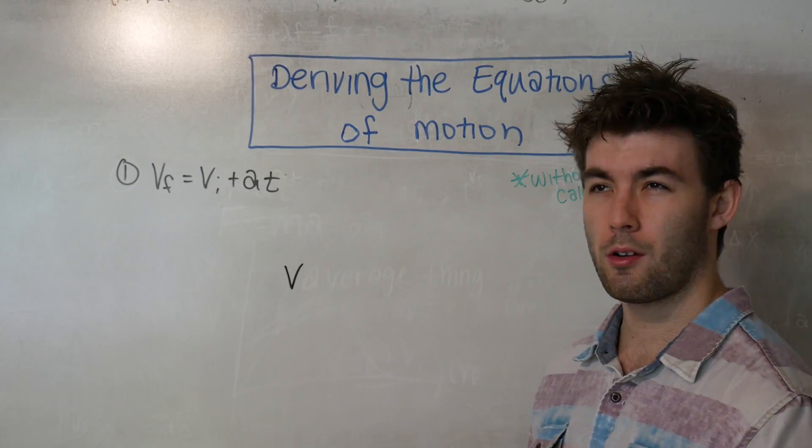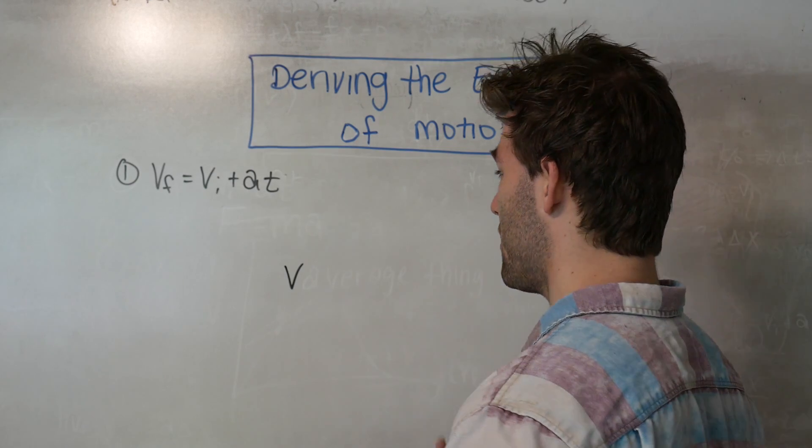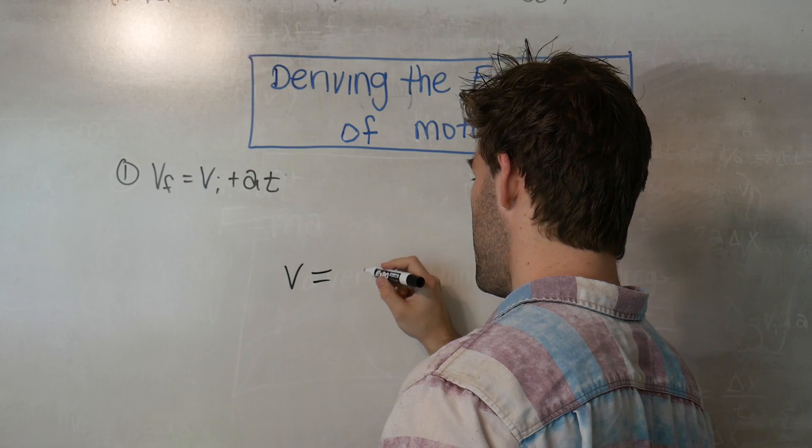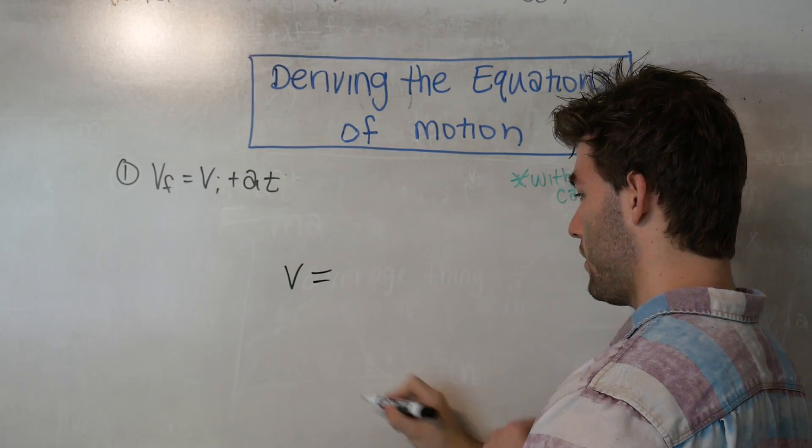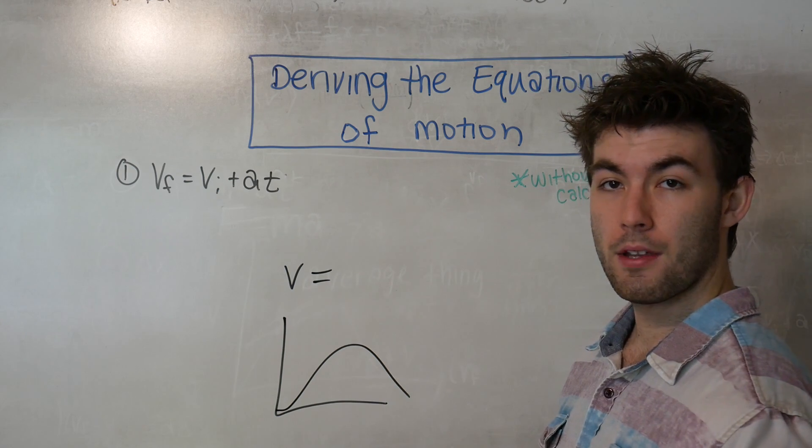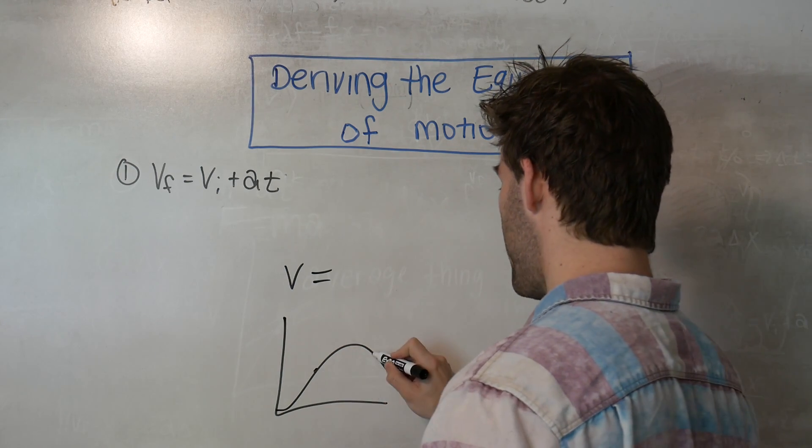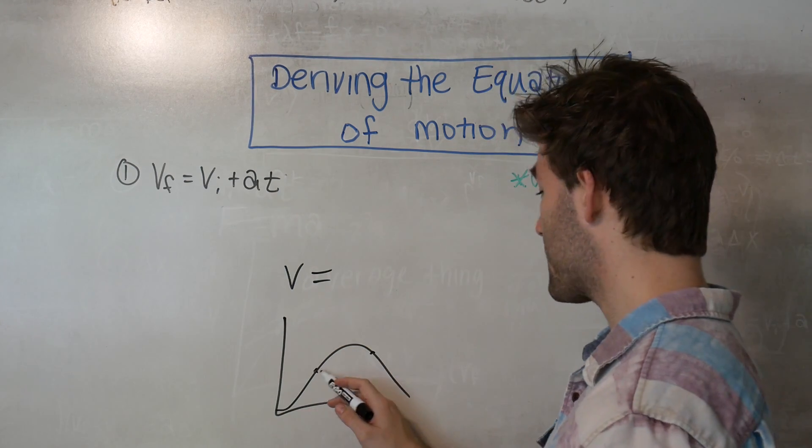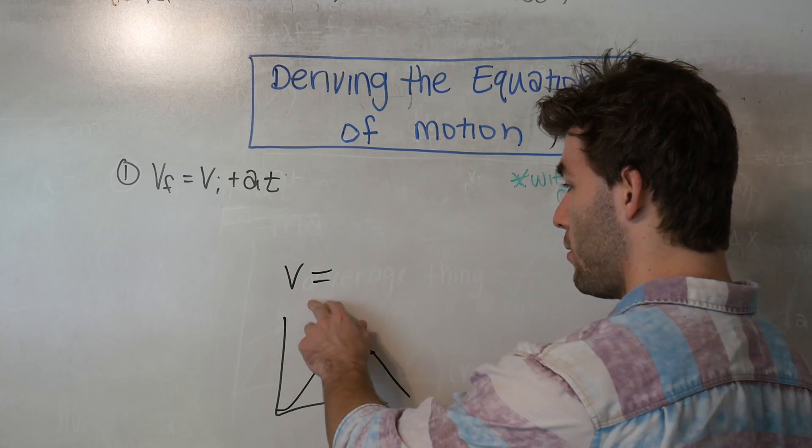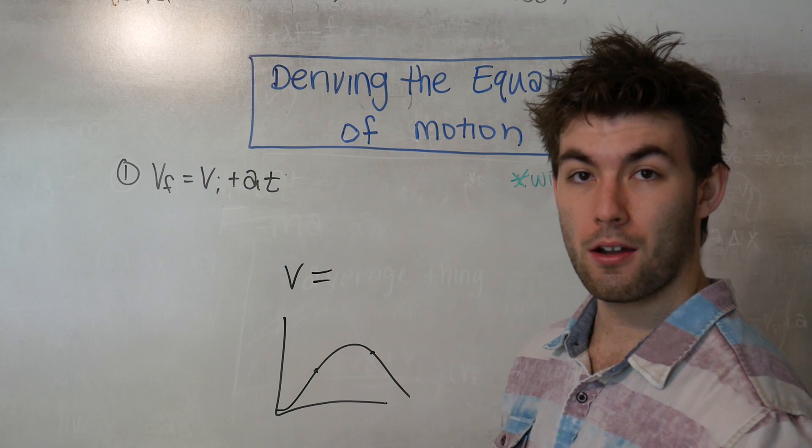I'm just going to call it V. I'm not going to call it V average for reasons that will be more apparent later on. So V is going to be equal to, when you look at that graph, so say this is velocity over time. If we have two points that we're finding the average, the first one is going to be V initial, the second one is going to be V final.